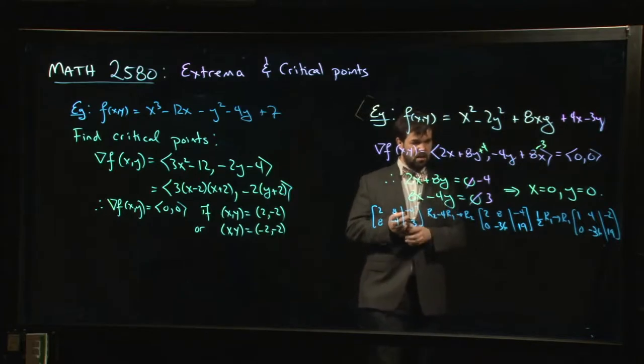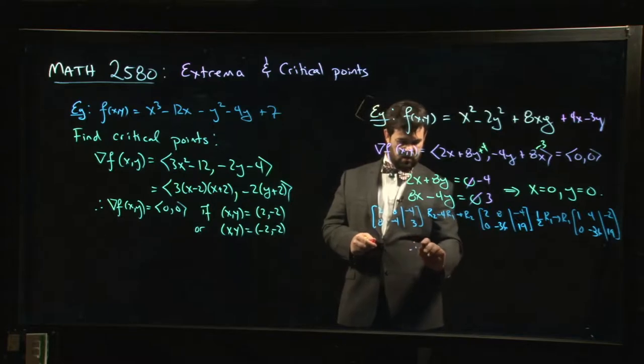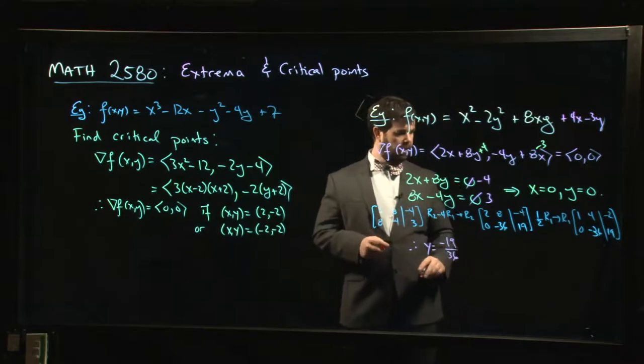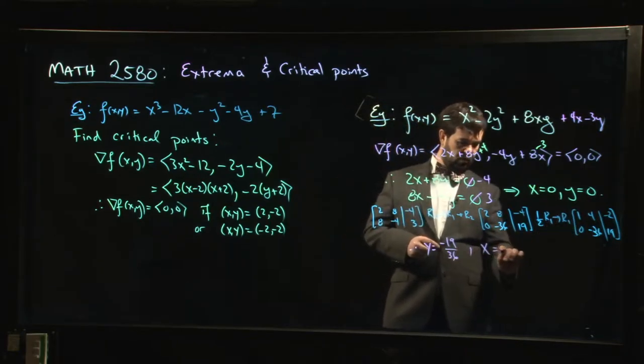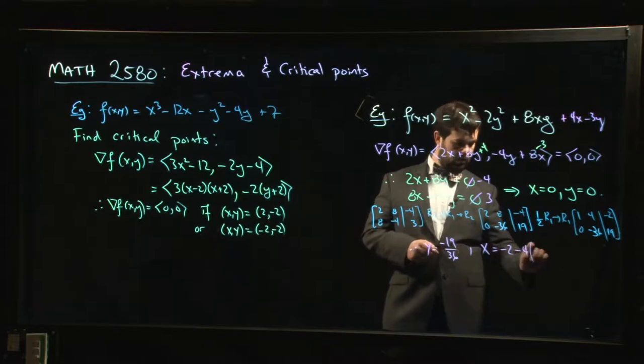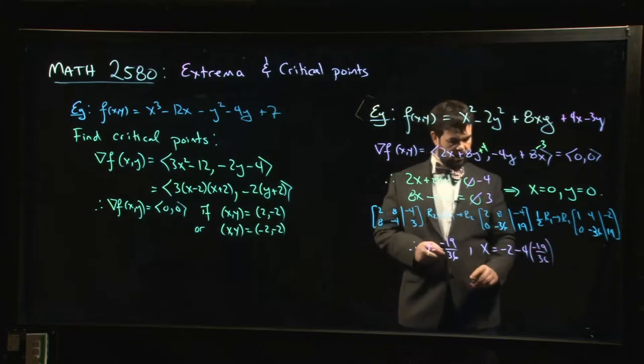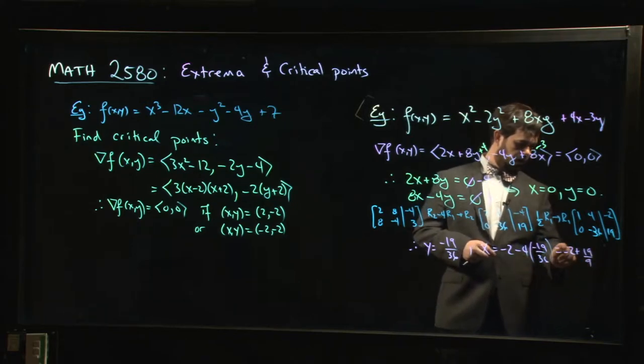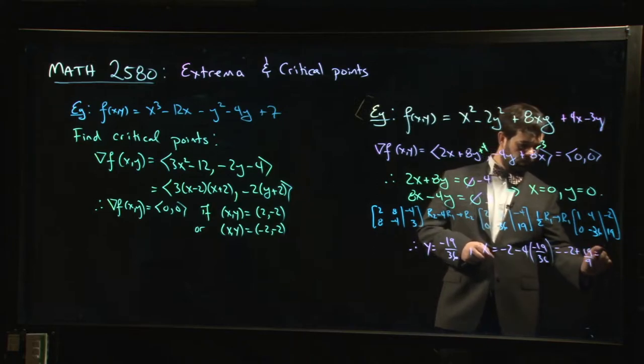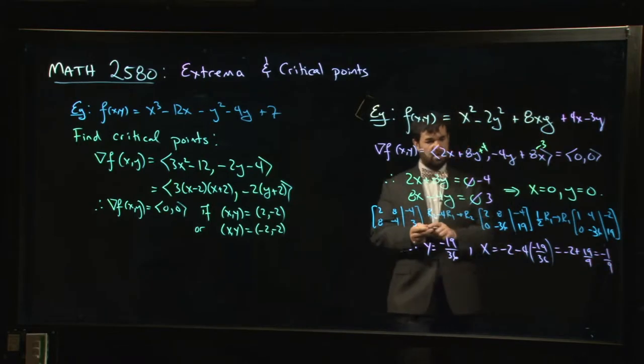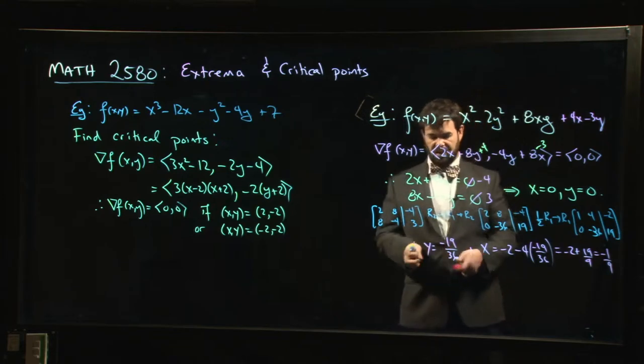So where's our critical point now? Well, the second row says that y has to be, oh geez, it's horrible now. -19/36. And then x is going to be what? Well, x is -2 - 4y. Oh, but that's -19/36. So that's -2 + 4/36, that's 1/9 + 19/9, -18/9 + 19. So -1/9. All right. So now you've got your critical point. X is -1/9, Y is -19/36.